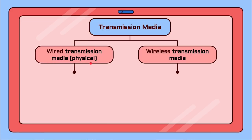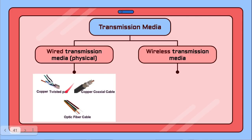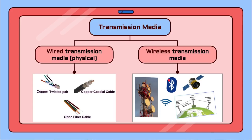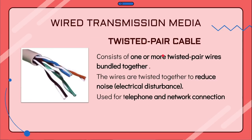Wired transmission media is visible — you can see it and touch it. It uses wires, cables, and other tangible means to send communication signals. Examples include fiber optic cable, twisted pair cable, and coaxial cable. The second type is wireless transmission media, where communication signals are sent through the air or space using radio waves, microwaves, and infrared. Examples include Wi-Fi, Bluetooth, and cellular radio.